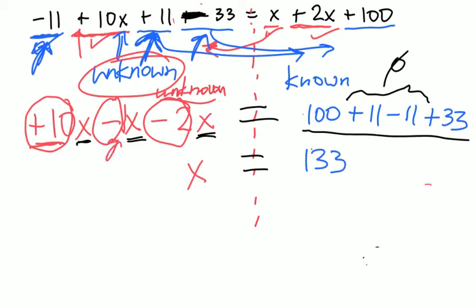9 minus 2 will give me 7. So the value here would be 7x equals 133. So I've now just collected my like terms.